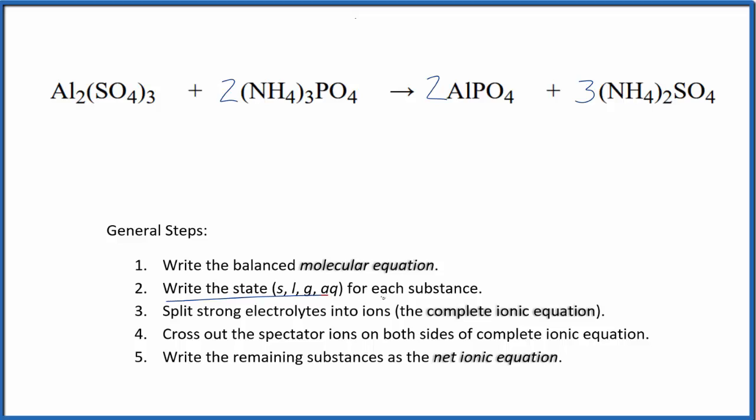Next, we write the states for each substance based on the solubility rules. That'll look like this. Sulfates in general are soluble. The aluminum sulfate and the ammonium sulfate are going to be aqueous, soluble.